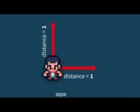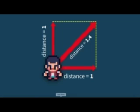But when we move both up and right at the same time, the distance traveled is actually closer to 1.4 pixels, and that is 40% faster.